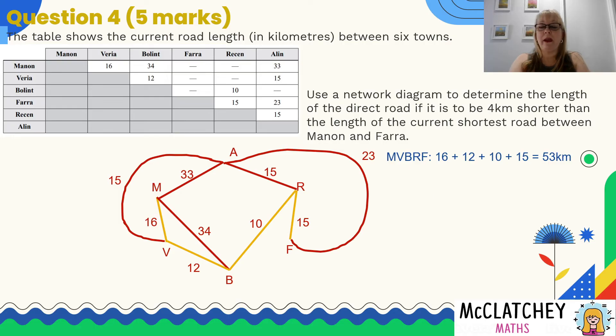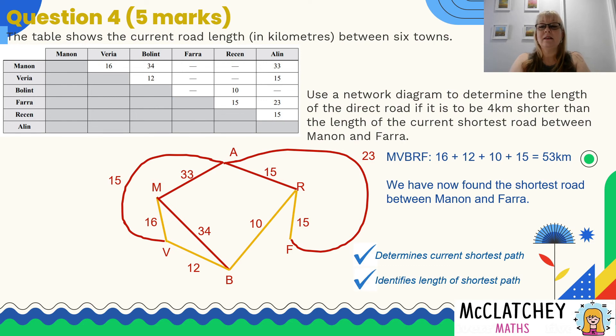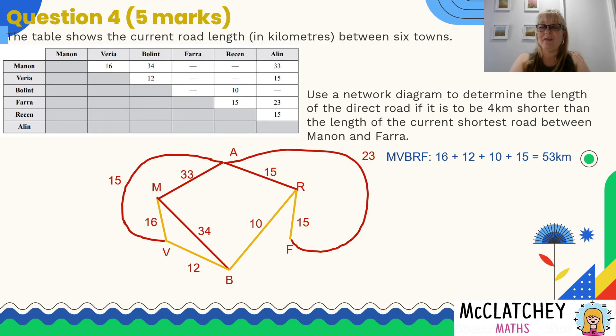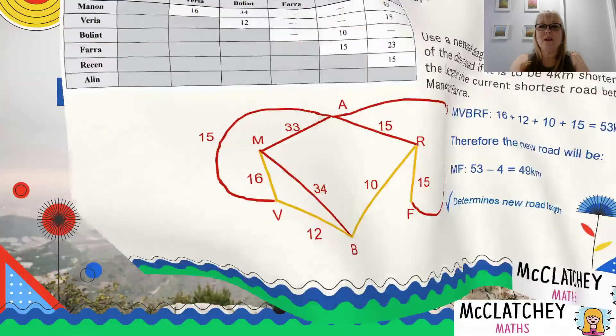If I go back any other way, it's going to be longer. So I need to find a roadway between Manon and Farrah that is shorter than 53 kilometers by 4 kilometers. So I'm going to take that away. Now this was a mark here for working out M-V-B-R-F, and also identify by adding those four numbers together I got my fourth mark. So I'm nearly there with all the marks I've achieved. So now I need to take that 53, take away 4, it will be 49 kilometers. Determining that new road length was my final mark for this question.